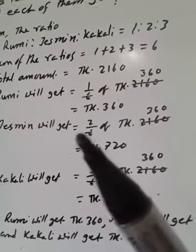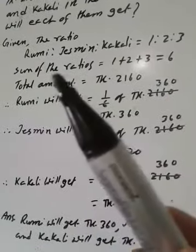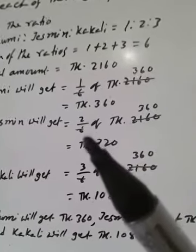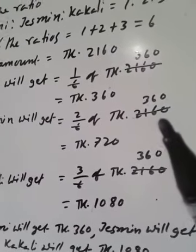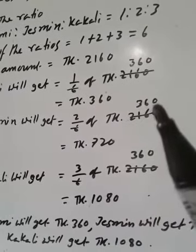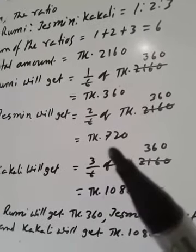Jasmine will get 2 by 6 part, 2 by 6 of taka 2160. 2160 divided by 6 is 360, multiplied by 2 is 720.